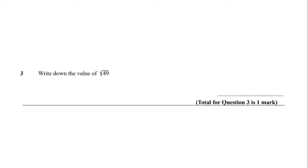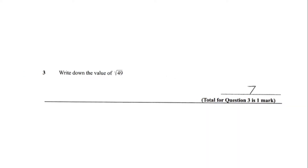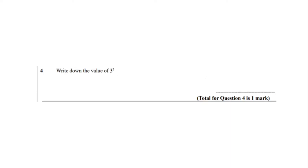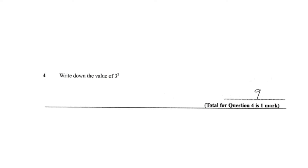Question number 3, write down the value of the square root of 49. You should have got 7. Question number 4, write down the value of 3 squared. You should have got 9.